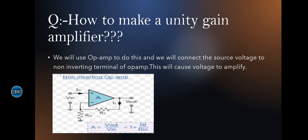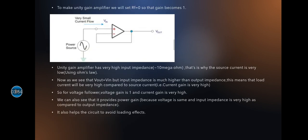This means that the gain of this circuit is 1 plus Rf by Rn, and we can also see that we can make this unity gain amplifier if we set Rf equals to zero.